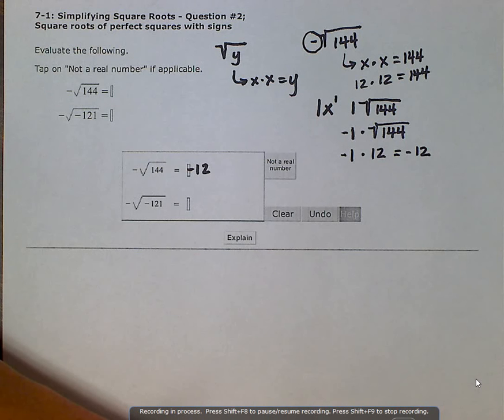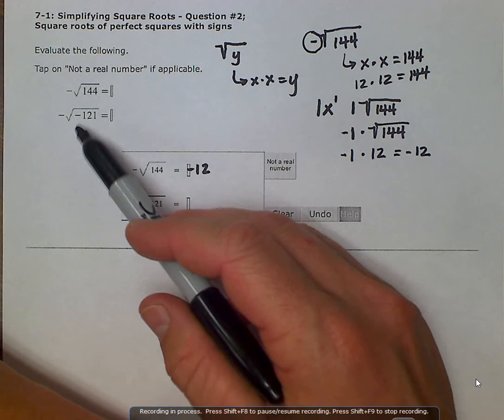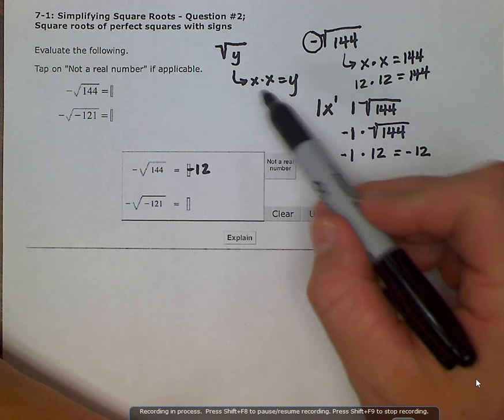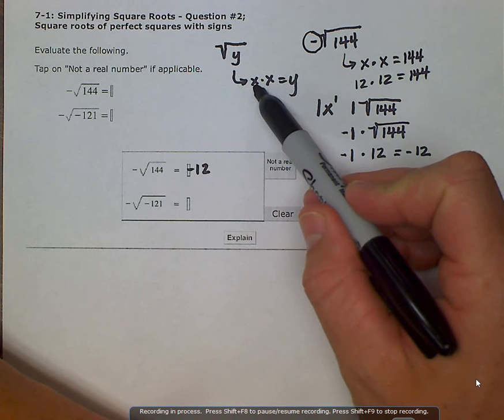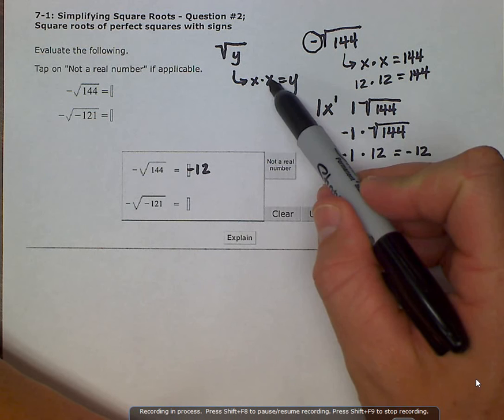However, let's consider if there is a negative under the radical. Is there any number when you multiply it by itself that can give you a negative number?